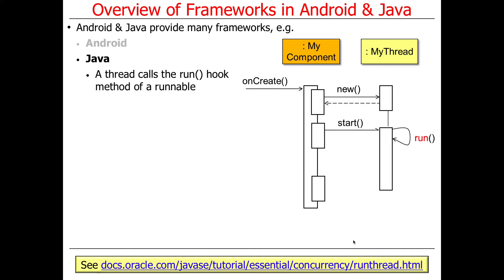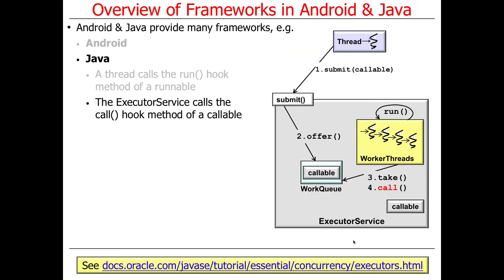Those are a couple examples of frameworks in Android. Java also has lots of frameworks. One of them you've already played with is the Java thread framework. The way it works is when you say new thread, give it a runnable and call start — that ends up using the threads framework, which will dispatch the run hook method on the runnable given to the constructor of the thread. Something else we've briefly talked about is the executor service, which is also a framework. It allows you to submit tasks, and those tasks are then run in a pool of threads, working by dispatching the call hook method of a callable to carry out the computation in a background thread.